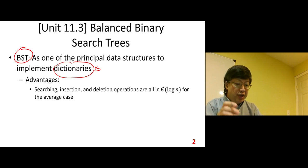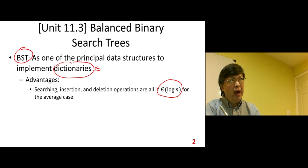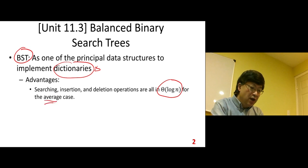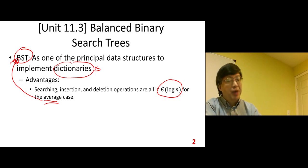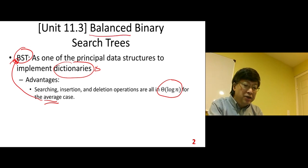Advantages: searching, insertion, and deletion operations are all in big theta of log n for the average case. Here we use this for average case because we're talking about the general BST, not the balanced BST. That's why this big theta of log n is the average case.